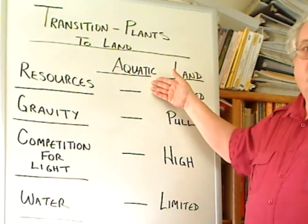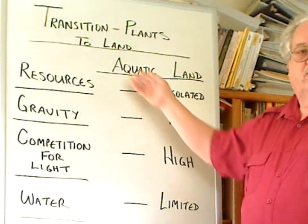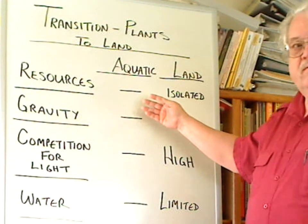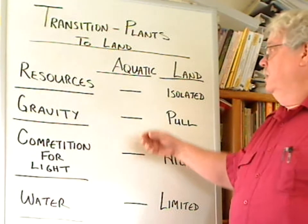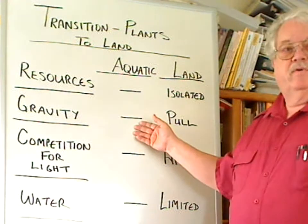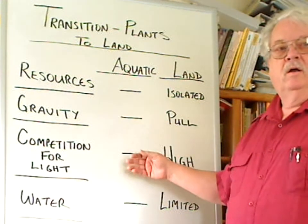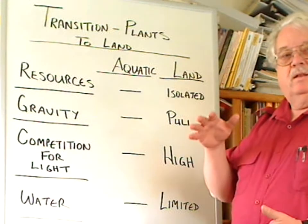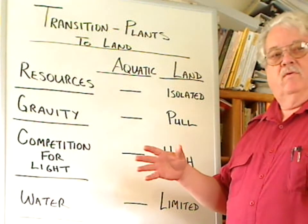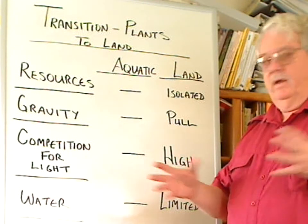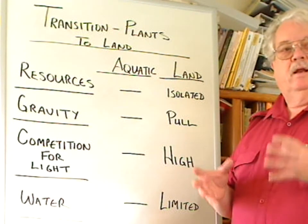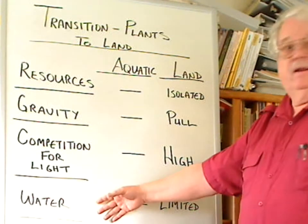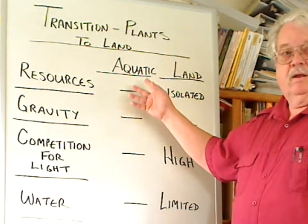In an aquatic environment, the resources are all surrounding the plant and directly in contact with it as part of the water. Gravitation has very little effect. There's little competition for light because light doesn't go very deeply in the water, so the plants are oriented towards a fairly narrow band of light availability. And water, by definition, is available in the aquatic environment.